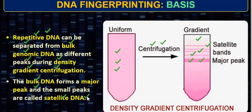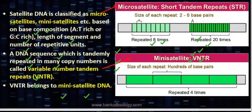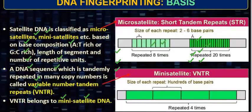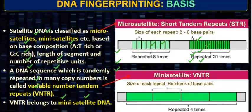The major peak is represented according to its concentration in the gradient. Now, the satellite has two types. The first type is the micro satellite. We call the micro satellite short tandem repeats — STR.